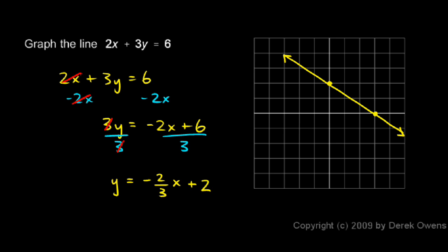You can see that this is now in slope-intercept form, and this is exactly what I have drawn over here. I have a y-intercept of 2 and a slope of negative 2 thirds. From one point on the line, I can go down 2—that's a rise of negative 2—and then over 3, a run of 3. That puts me at another point on the graph.